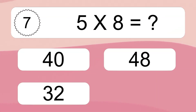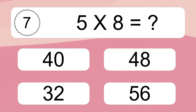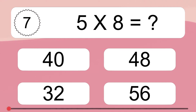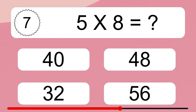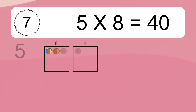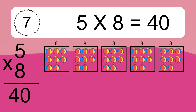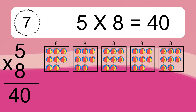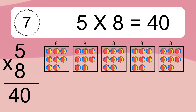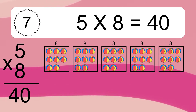Five times eight equals what? Five times eight equals 40. We have five boxes, and each box has eight colorful balls inside. If you count all the balls in all the boxes together, you will have five times eight balls. This equals 40 balls.